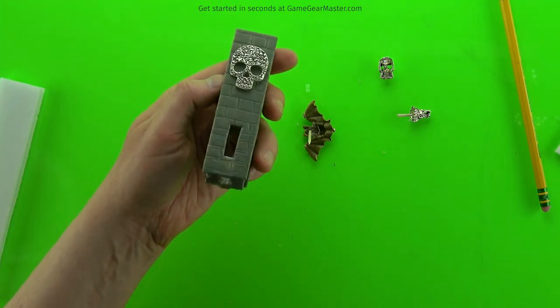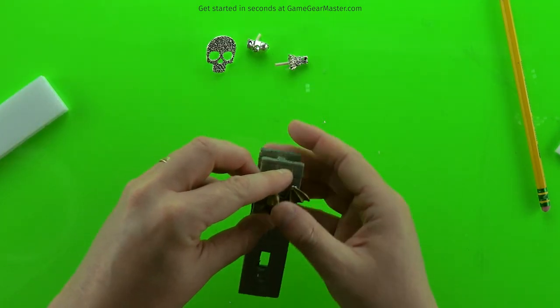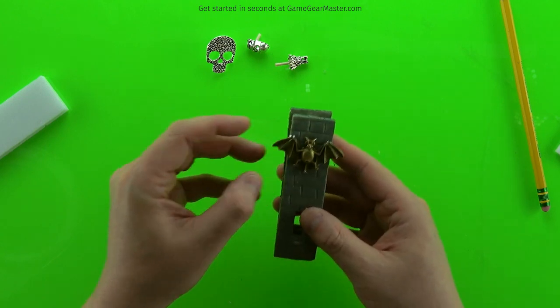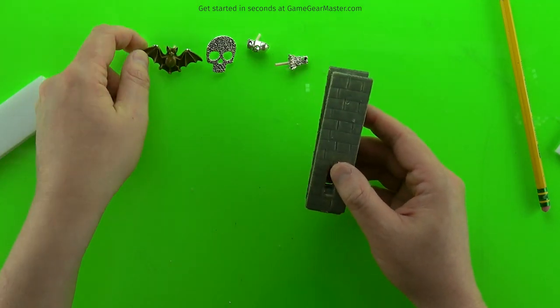And just for good measure, I also made a bat because I figured who wouldn't want a bat, right? You can see this is sort of in a dull gold finish with a shading on it. And these are all available on the Game Gear Master online store.